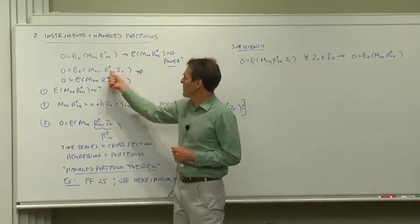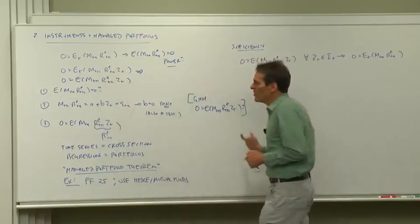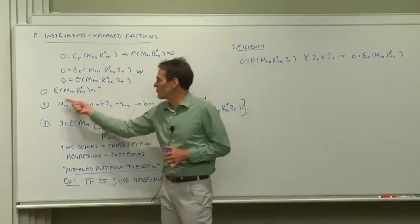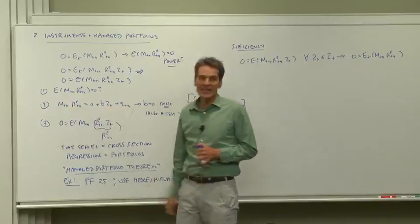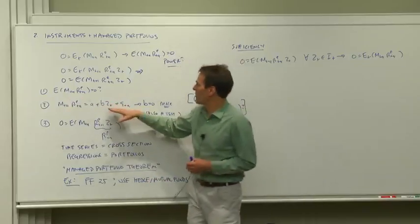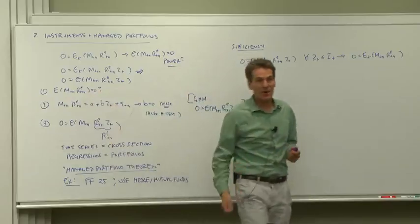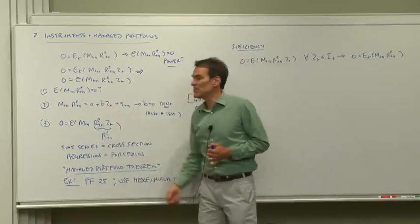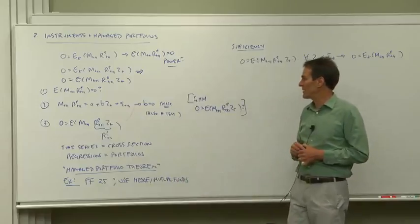If we want to see if E(MR times z) is 0, one way of thinking to do that, let's run MR on z, and can z predict MR? That's a more powerful implication than just, is MR 0 on average? Can z predict it or not? That's another more powerful way of doing it.